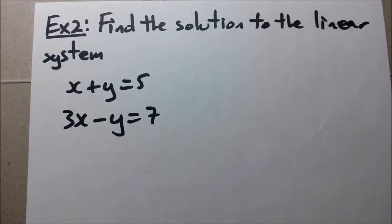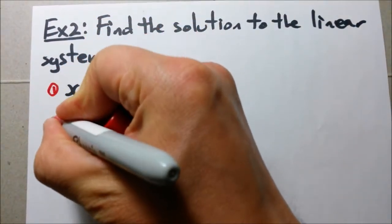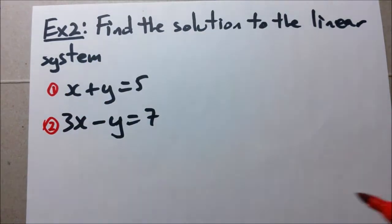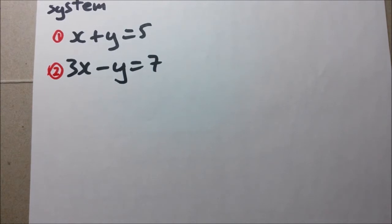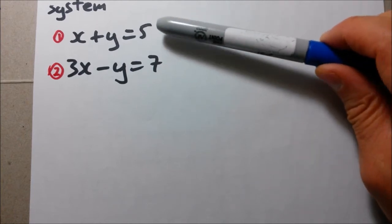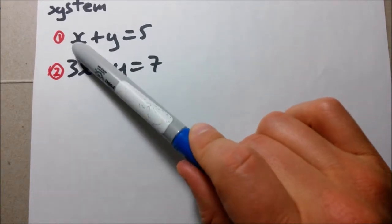So just like before, I suggest label each of the equations just to keep order. Label this one as our first equation, this one as our second equation. And the first step, as mentioned before, is to solve for one of the variables. So you choose either equation 1 or equation 2, and then you can choose to solve either for x or y.